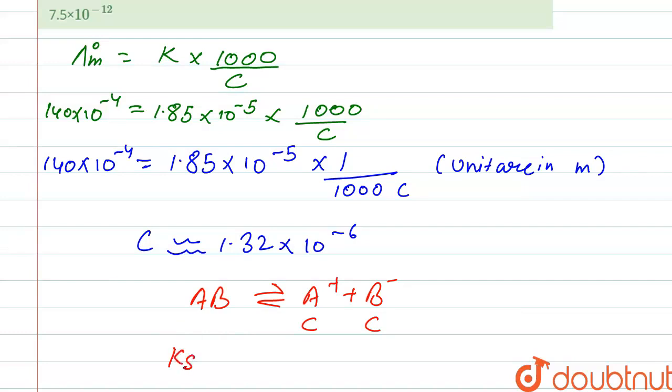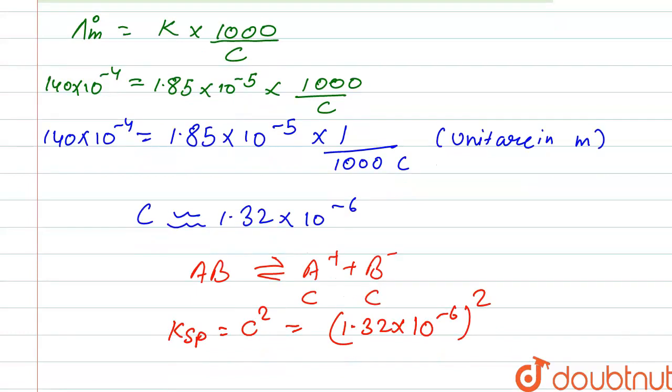Ksp is written as C^2. So it is equal to (1.32 × 10^-6)^2. And after solving this we get...